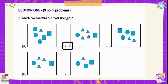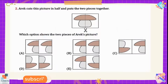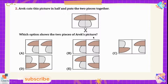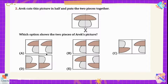Question number two: Eric cuts this picture in half and puts the two pieces together — which option shows the two pieces of Eric's picture? In this question we cannot flip one half of the picture; we have to rotate it. In options A, B, and D we would have to flip one half to make a complete picture, but we cannot flip.